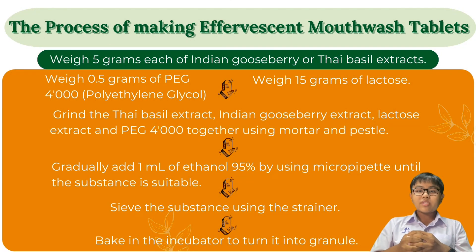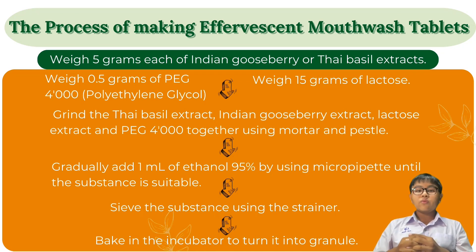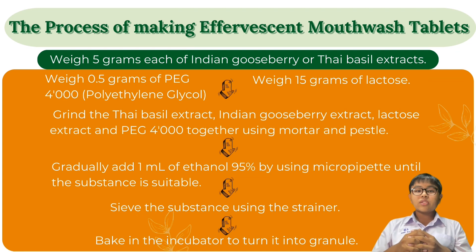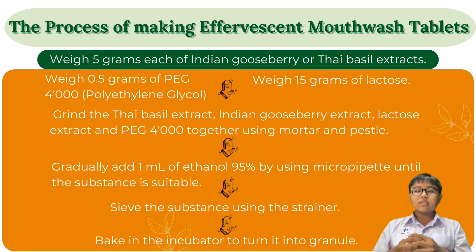The process of making the effervescent mouthwash tablet: weigh 5 grams each of Indian gooseberry and Thai basil extract. Weigh 15 grams of baking soda. Weigh 0.5 grams of PEG 4000. Combine the Thai basil extract, Indian gooseberry extract, baking soda, and PEG 4000 together. Use water as a binder paste. Gradually add 1 ml of 95% ethanol. Mix using a mixer until the substance is suitable. Sieve the substance using a strainer. Bake in an incubator to form granules. The remaining ingredients are mixed with the effervescent tablet base.